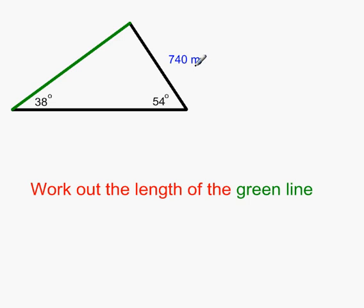The next option would normally be SOHCAHTOA, but in order to use SOHCAHTOA we must have a right angle triangle. This angle is 38 degrees and this angle is 54 degrees. That gives us 92 degrees in total. The three angles in the triangle must add to 180, which means the third angle is 88 degrees. The triangle is not a right angle triangle, so we cannot use SOHCAHTOA. That means in fact that we couldn't use Pythagoras either, because in order to use Pythagoras we must also have a right angle triangle.